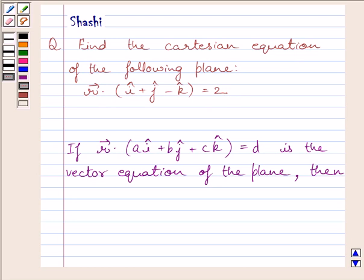First of all, let us understand that if this is the vector equation of the plane, then Ax plus By plus Cz is equal to D is the Cartesian equation of the plane.